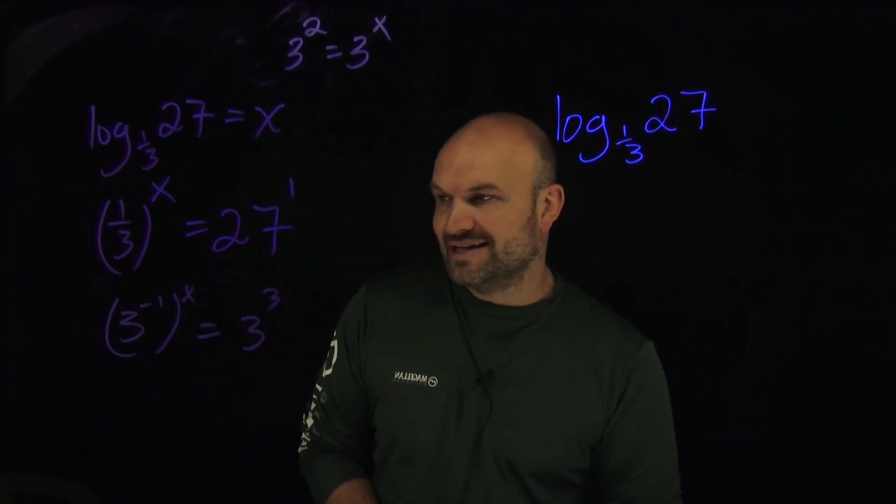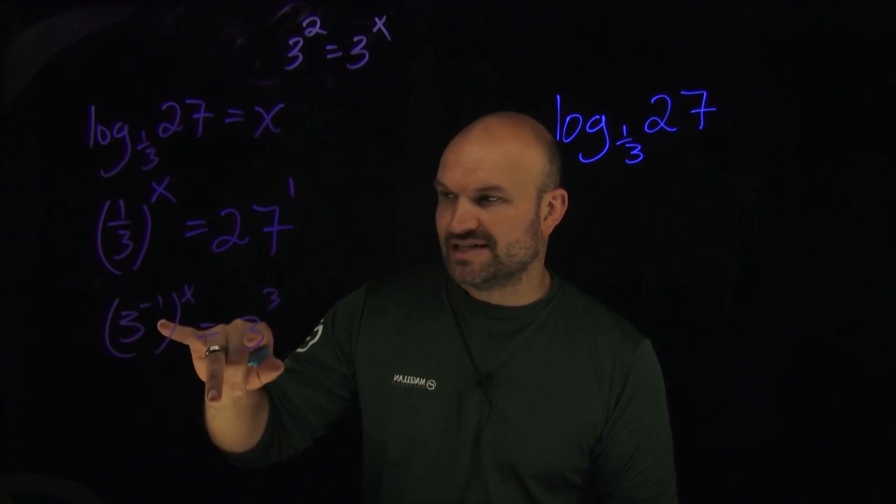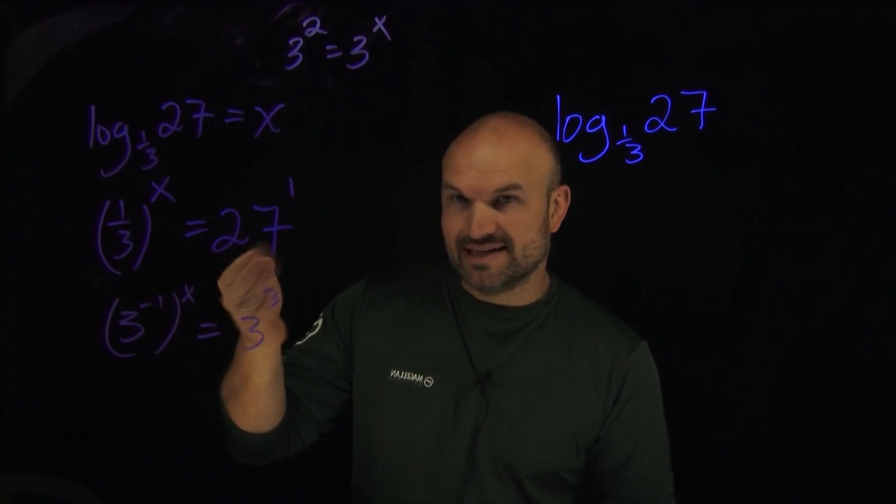And then hopefully you recognize that 27 can also be raised to three cubed. Now you can see my one-to-one property can now be applied because I have a base three and I have a negative one times x is equal to three.